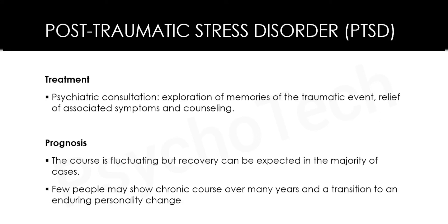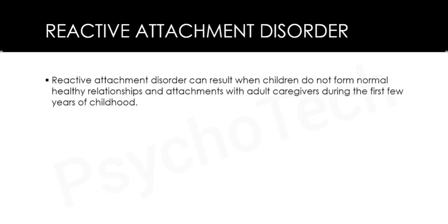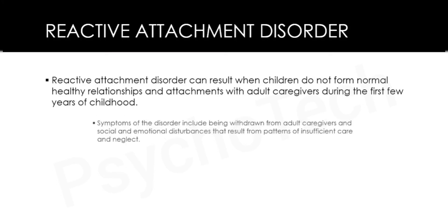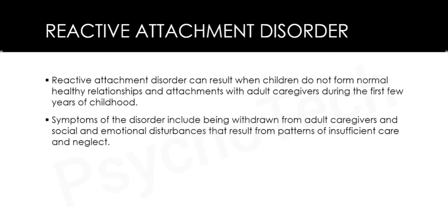The next type is reactive attachment disorder, which can result when children do not form normal, healthy relationships and attachments with adult caregivers during the first few years of childhood. Symptoms include being withdrawn from adult caregivers and social and emotional disturbances that result from patterns of insufficient care and neglect.